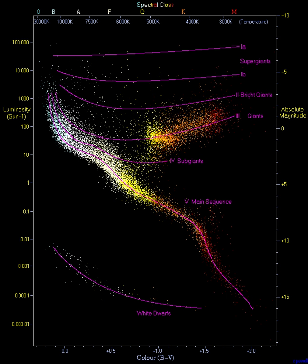The MK classification assigned each star a spectral type—based on the Harvard classification—and a luminosity class. The Harvard classification had been developed by assigning a different letter to each star based on the strength of the hydrogen spectral line, before the relationship between spectra and temperature was known.